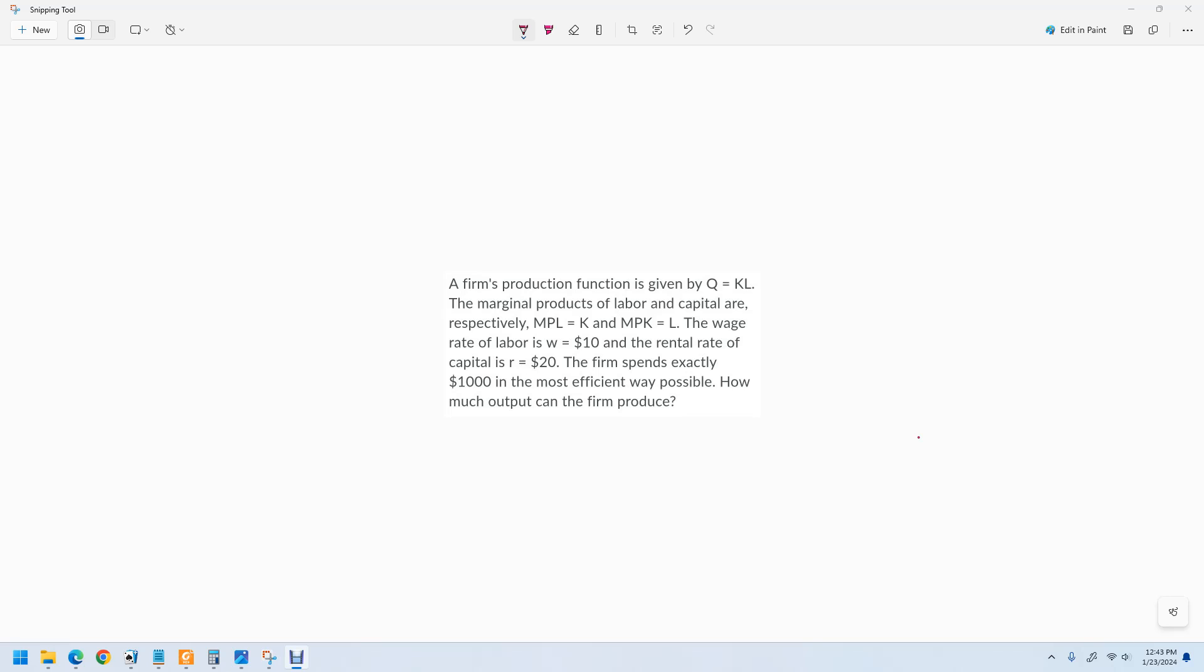So we've got a bunch of things in the problem that we're going to use to figure out what the answer is. First case is that total cost is equal to the wage times the number of labor units plus the R, which is the rental rate of capital, times the number of capital units.